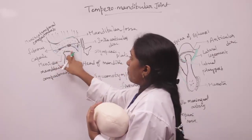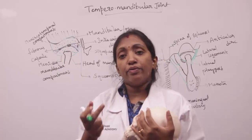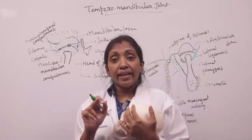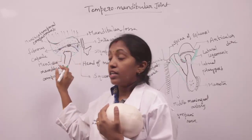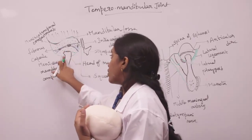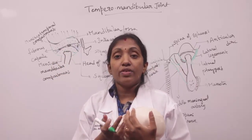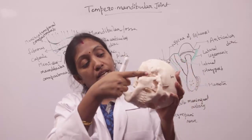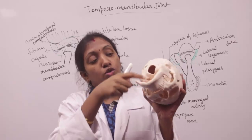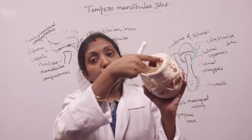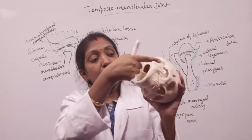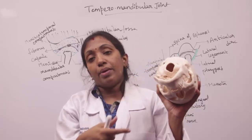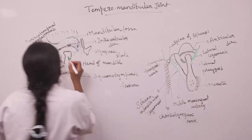The head of the mandible measures about 20 mm from side to side and 10 mm in anteroposterior diameter. It is more convex anteriorly than posteriorly. The two heads of the mandible lie in the arc of a circle which passes along the anterior margin of the foramen magnum.